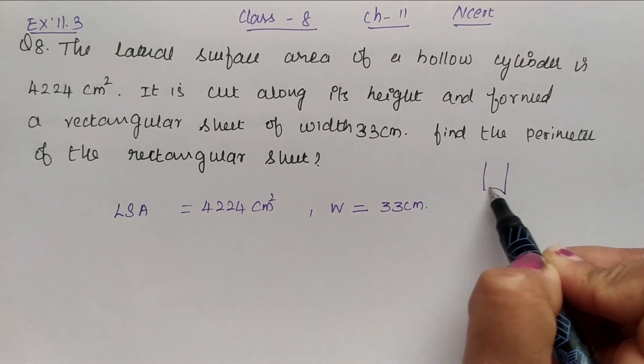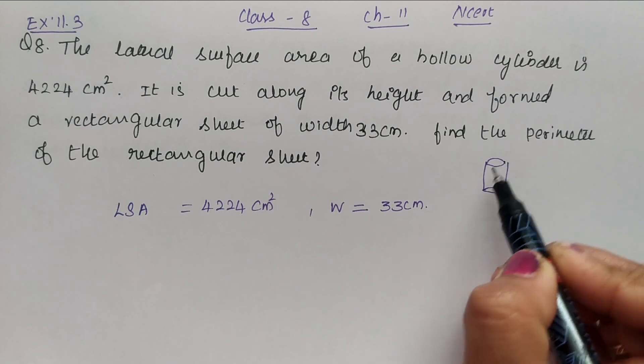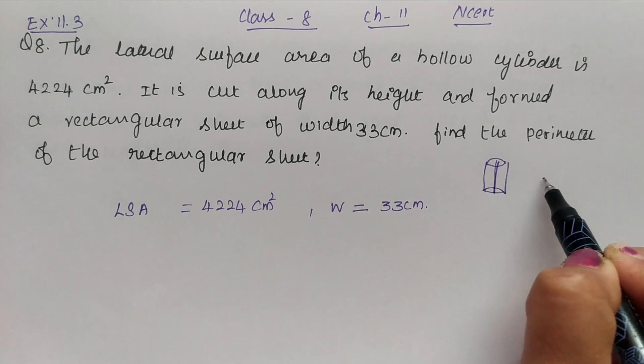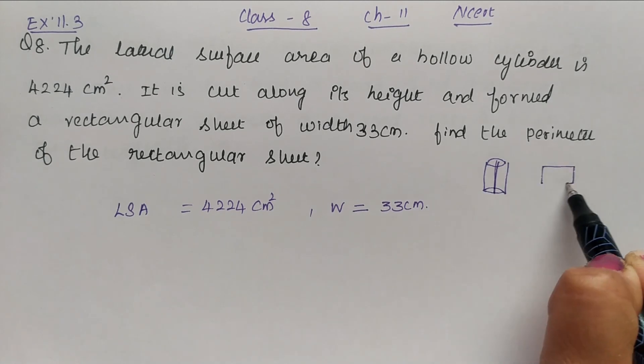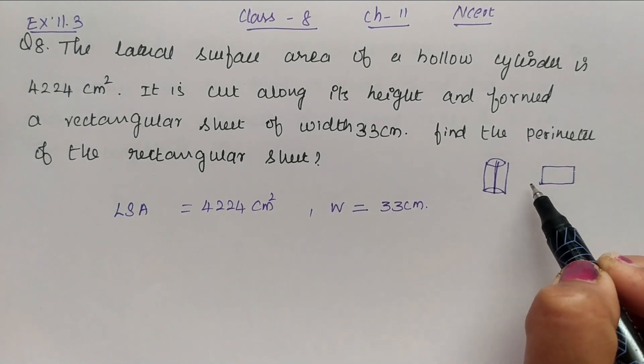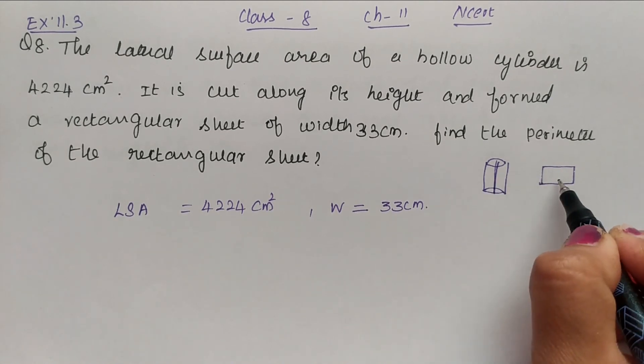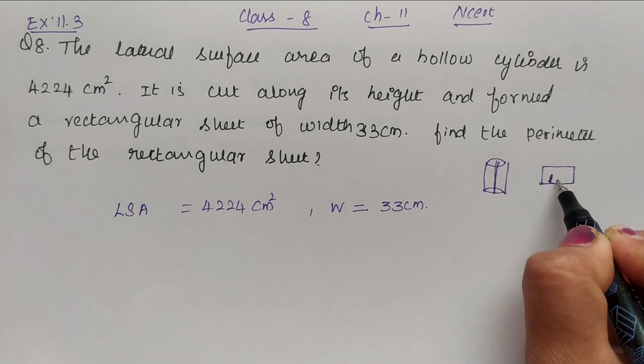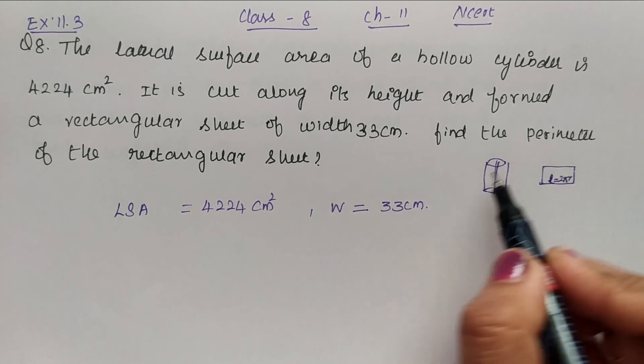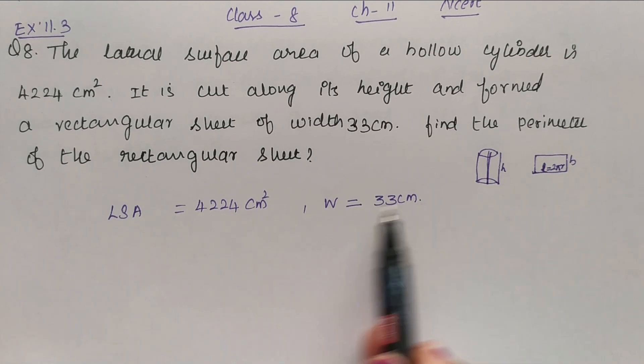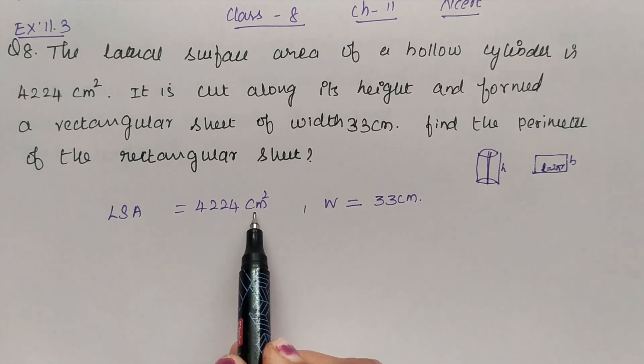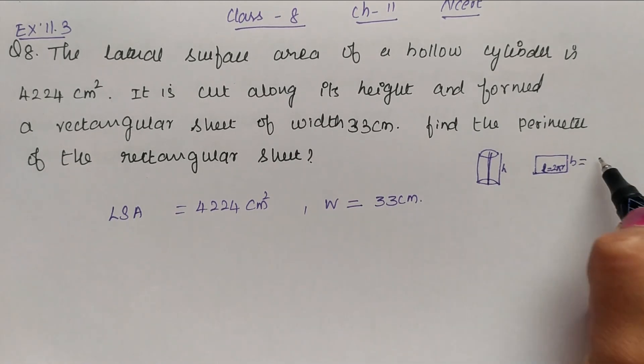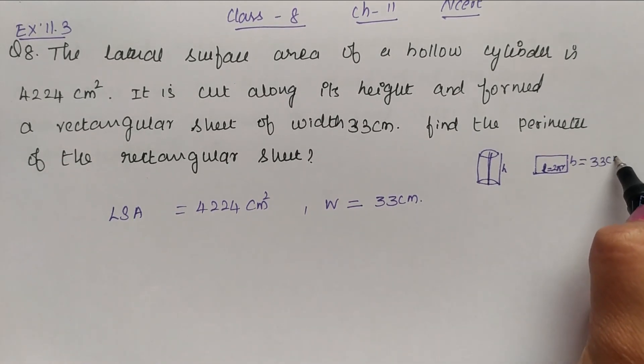So this is the hollow cylinder. When you cut along the height, when you cut this cylinder, this forms a rectangular sheet. So circumference of a circle becomes the length of the rectangle. So here L equal to 2πR. Lateral surface area is given, it is 4224 centimeter and width of the rectangular sheet is 33. So width is 33 centimeter.